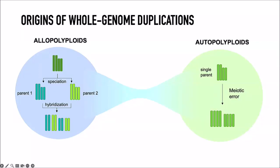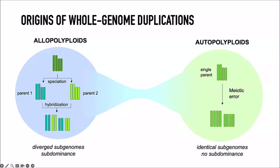These two mechanisms have significantly different consequences. In autopolyploidy you have two fully identical duplicated genomes from a single parent. In allopolyploidy the subgenomes can be significantly diverged before being brought together, leading to mechanisms of subgenome dominance — where one genome keeps more genes during rediploidization, or is more expressed. And if the two parents have different transposons, one can completely invade the other, leading to all kinds of evolutionary mechanisms.